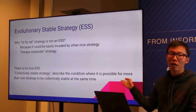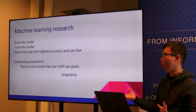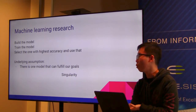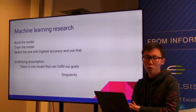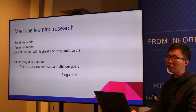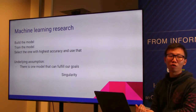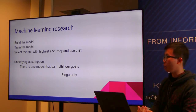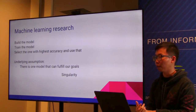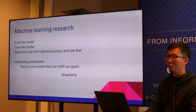This makes me think about how we do machine learning research today. We build a model, train it, select the one with the highest accuracy, and use that. This paradigm assumes there is one model that can fulfill our task, but in nature it doesn't work like this. Every system has tolerance through diversity — not because they are the strongest, but because diversity makes a species more robust and capable of surviving.